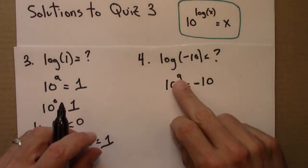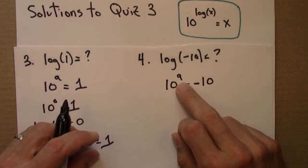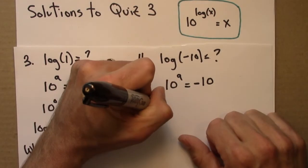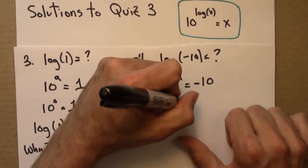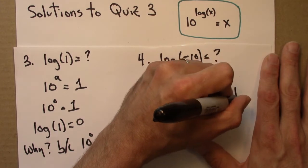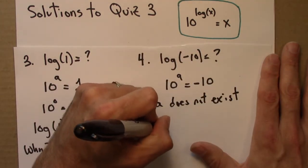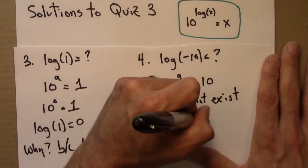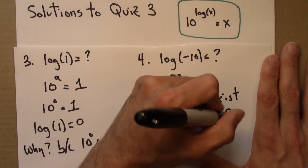And if you think about it for a moment, you can convince yourself that there is no such a. So a does not exist. So log of minus 10 is undefined.